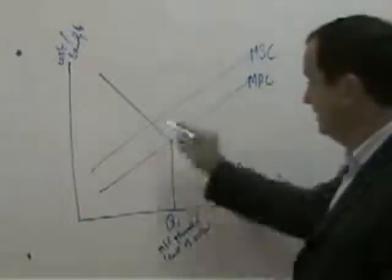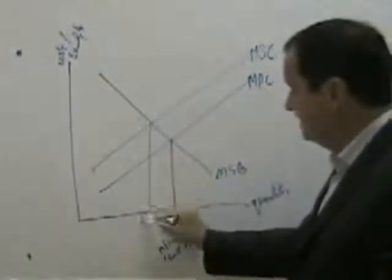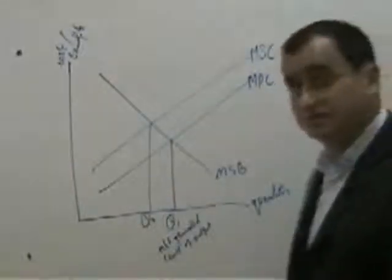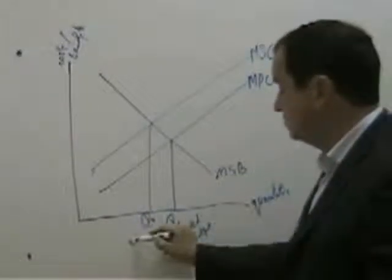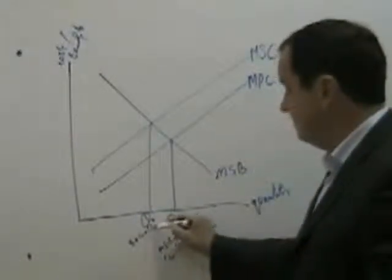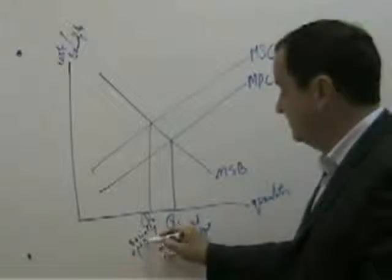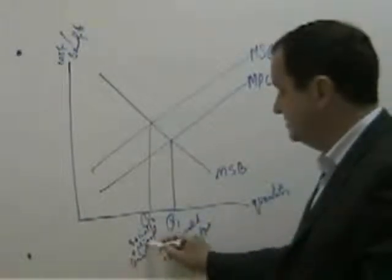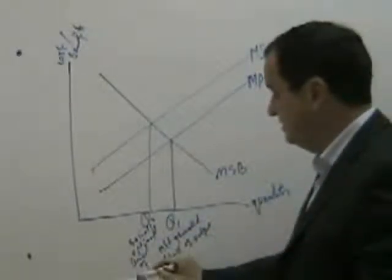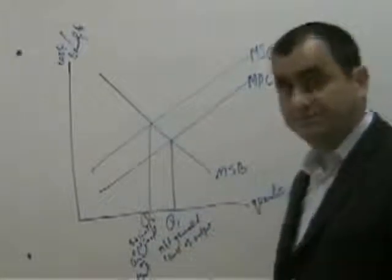Now we have a new equilibrium position here, and a new output level, Q2, which is the socially optimal level of output, the best level of output for society.